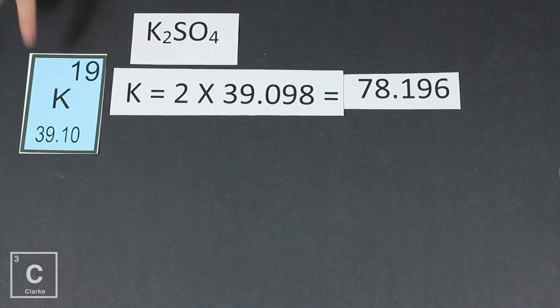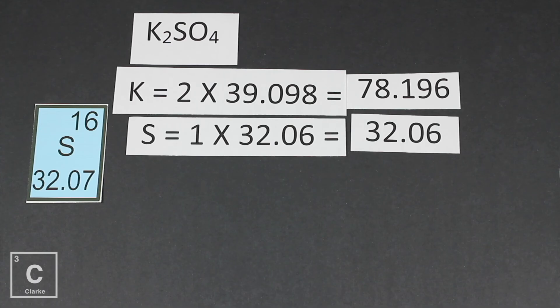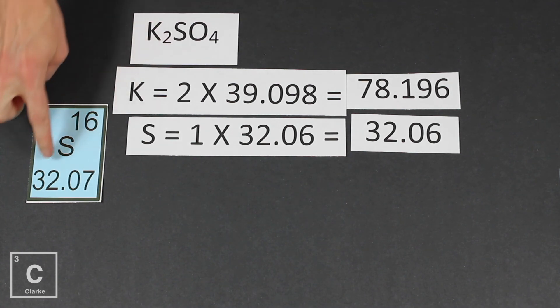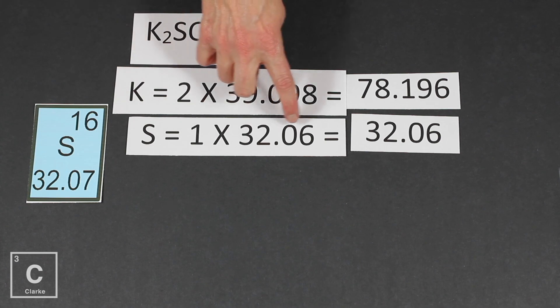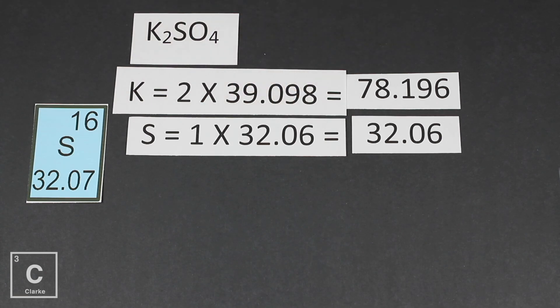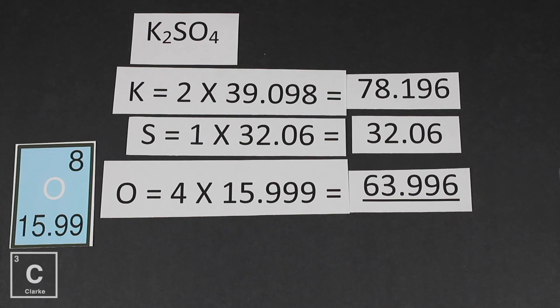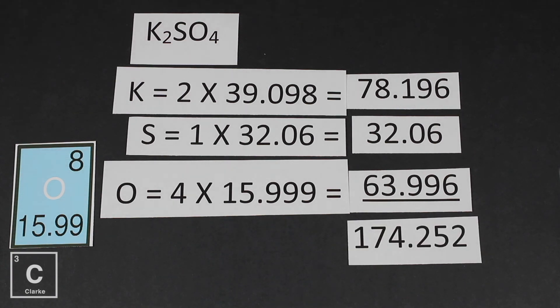Okay, so if we start with potassium, potassium's mass is 39.10. We have two of them though, so we've got to multiply it by two. That gets us 78.196. Sulfur, we only have one of those, and its mass is 32.06. Now let's look at oxygen. Oxygen's mass is 15.99. We have four of those. And so that gets us 63.996. For a total, our total molar mass, 174.252.